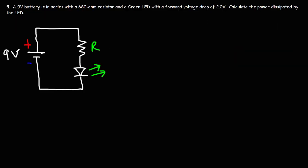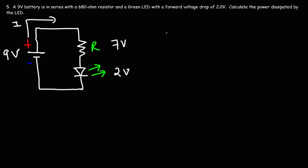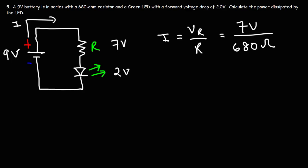Number 5: a 9-volt battery is in series with a 680-ohm resistor and a green LED with a forward voltage drop of 2 volts. Calculate the power dissipated by the LED. The process is the same as number 4. The voltage drop of the LED is 2 volts, so the voltage drop across the resistor is 7 volts, since these two must add up to 9. The current in the circuit is 7 volts divided by 680 ohms, which equals 0.01029 amps.